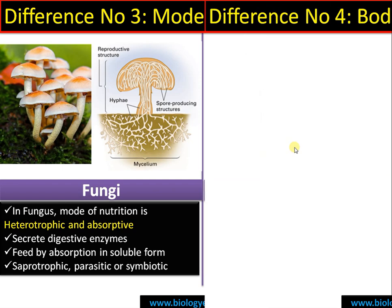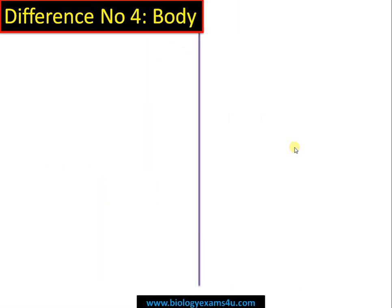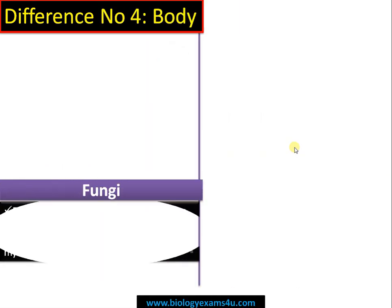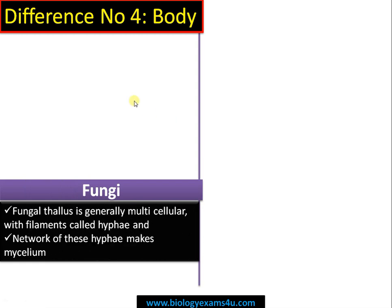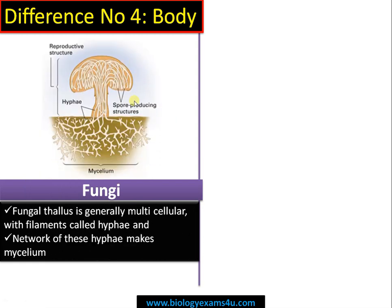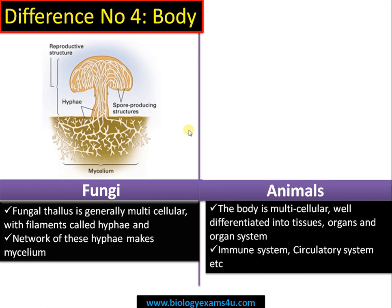Difference number four regards body organization. The fungal thallus is generally multicellular with filaments called hyphae, and a network of hyphae makes the mycelium. The mushroom we see is actually the fruiting body of a fungus — an aggregation of hyphae. The individual filaments are called hyphae and the massive network is called mycelium.